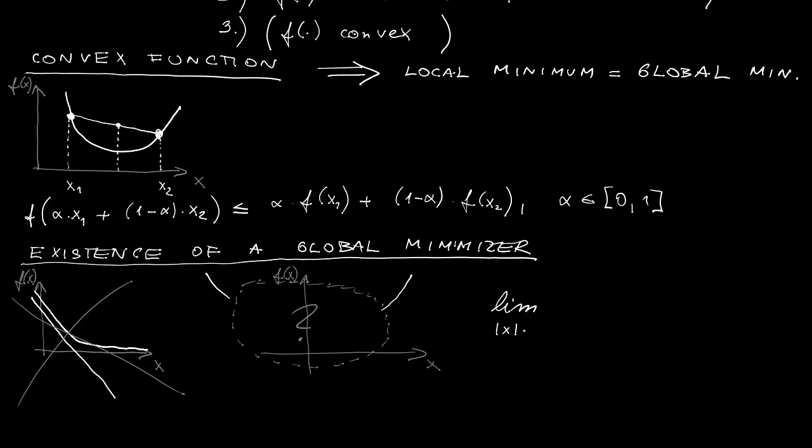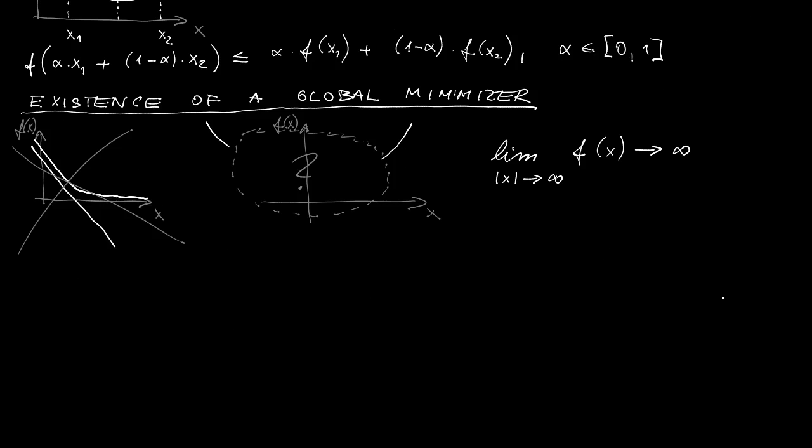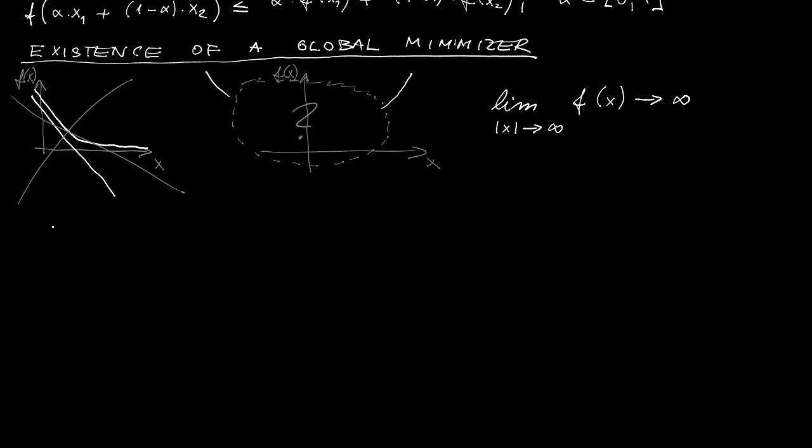So more formally, the function needs to satisfy the following condition: For x growing in absolute value to infinity, the value of the function must grow to infinity as well. Such functions are called coercive. So for coercive functions, we are guaranteed to have a global minimizer.